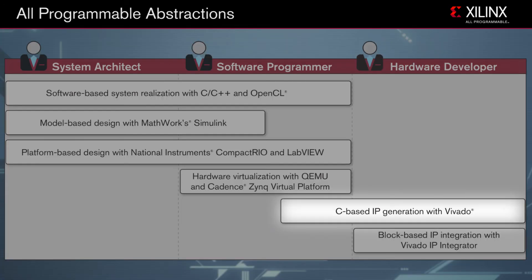The challenge is they then need to recode the algorithm into RTL for implementation, which of course can be time-consuming and error-prone. With C-based IP generation using Vivado High-Level Synthesis, this process is greatly accelerated by enabling the C specification to be directly targeted into Xilinx's all-programmable devices without the need to manually create RTL. Vivado High-Level Synthesis, which is part of the Vivado Design Suite System Edition, is available for download with a free 30-day evaluation license. I encourage you to give it a try.